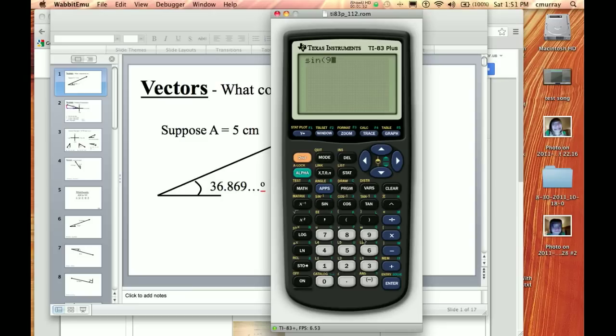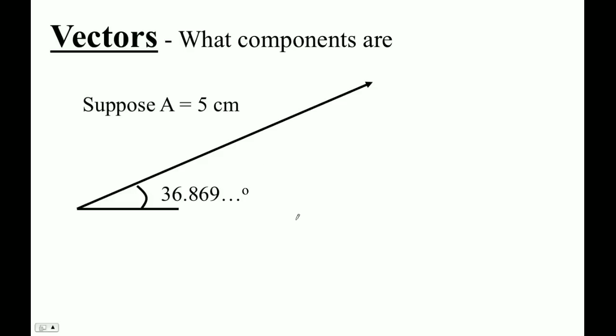Take the sine of 90. Don't need the right parenthesis, but there it is. If you get some random weird number, then you're in radians. Who knows what 90 radians is? But sine of 90 is the y coordinate on the unit circle at 90 degrees, which is straight up, and so it's 1. So that's what we have to do. Now, let's go back to here.